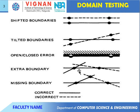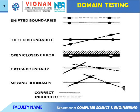Extra boundaries use straight one-dimensional representation with multiple lines. Missing boundaries: straight line without gaps is correct, and with gaps is incorrect. Extra boundaries are also incorrect.